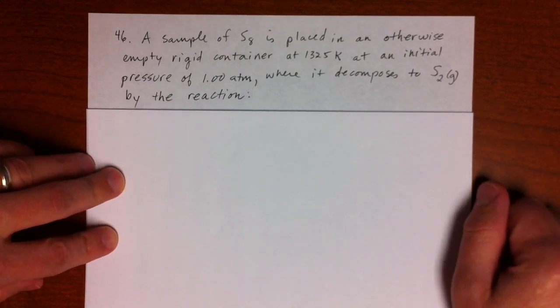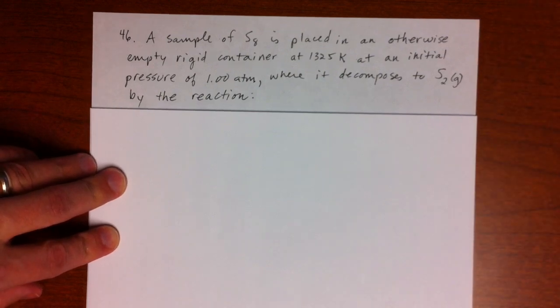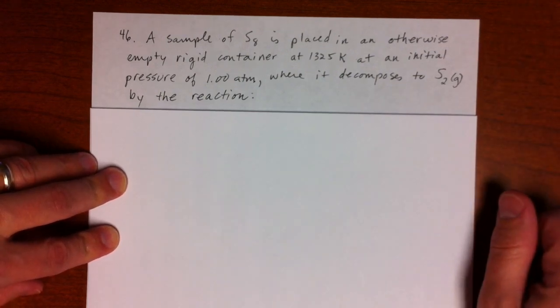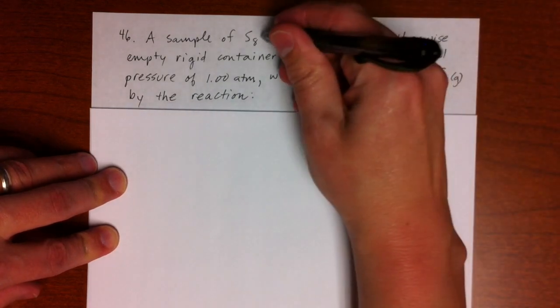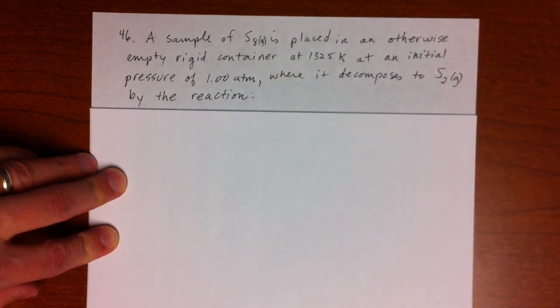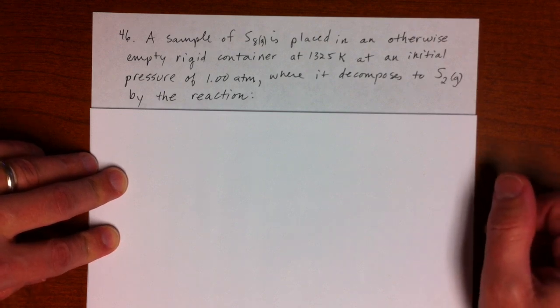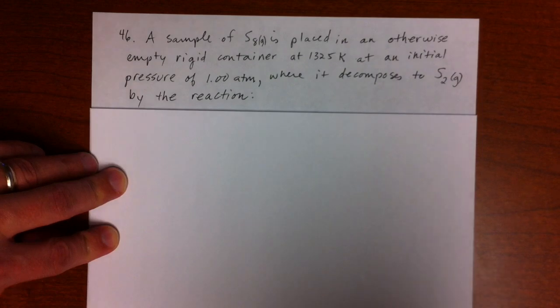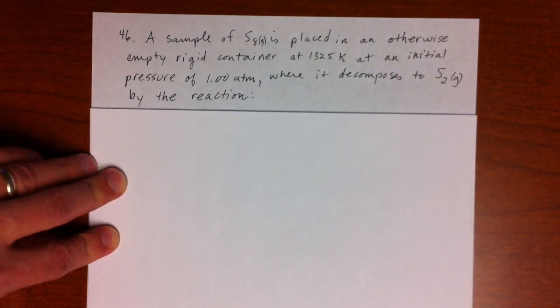This one is number 46 from the Zoomdahl 8th edition chemistry, which says a sample of S8 gas is placed in an otherwise empty rigid container at 1,325 kelvins at an initial pressure of 1.00 atmospheres, where it decomposes to S2 by the reaction.